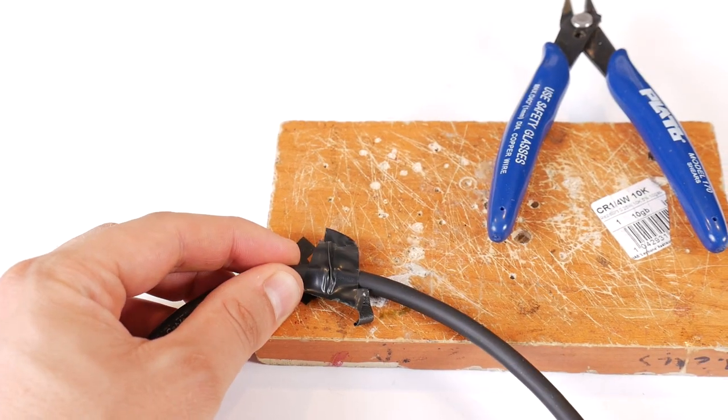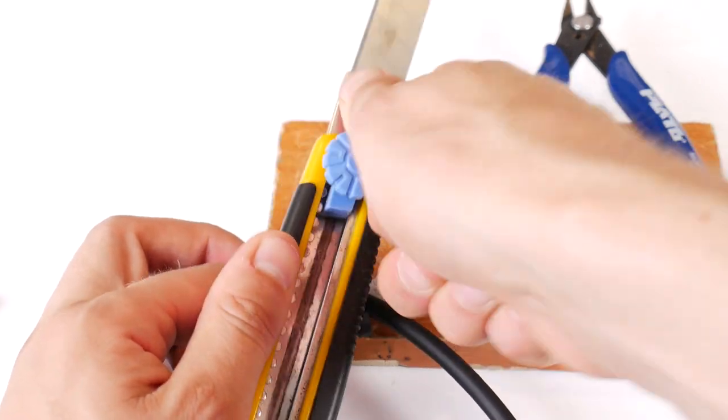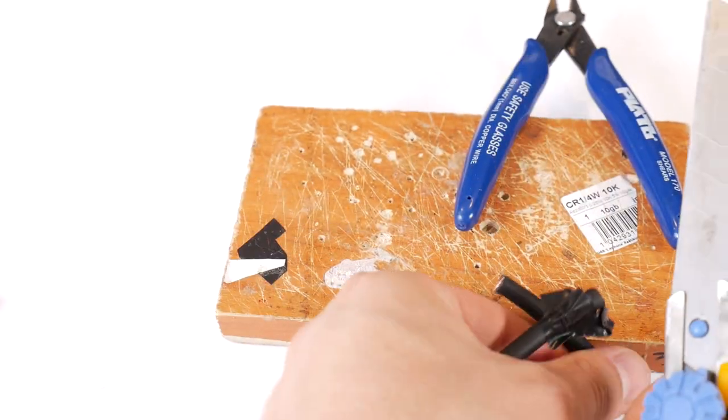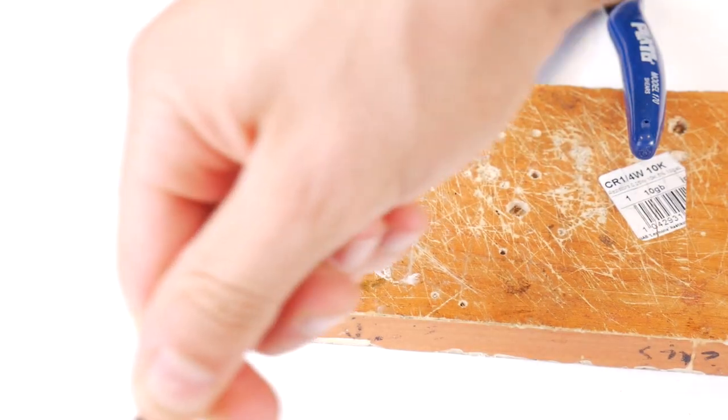Start by measuring how long you need the subwoofer cable. Always make the cable with a little margin. Then cut the length of cable you need. Then stretch it from one end of the cable to the other by pulling on it to straighten it out.